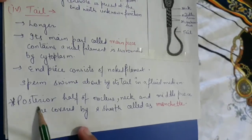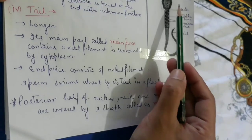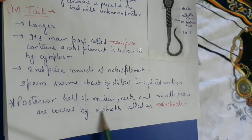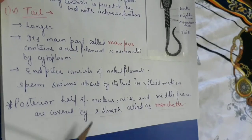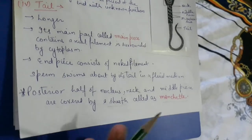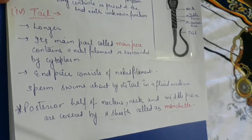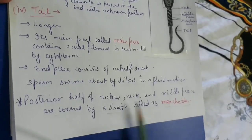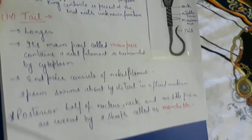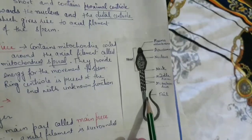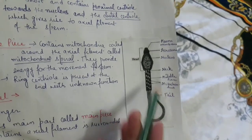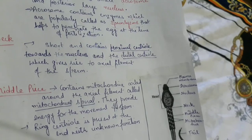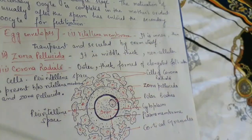The posterior half of the nucleus, the neck, and the middle piece are covered by a sheath called the manchette. This covering surrounds the last half of the nucleus, the neck, and the middle piece. So these are the four parts of the sperm — head, neck, middle piece, and tail. This diagram is often asked in exams, and explaining the structure of sperm is also commonly required.